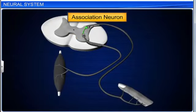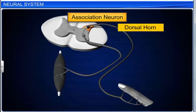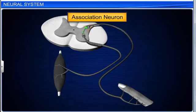Association neurons, which are also called interneurons or mixed neurons, are found in the central nervous system, for example the dorsal horn of the spinal cord. They interlink the axon of a sensory neuron with the dendron of a motor neuron.